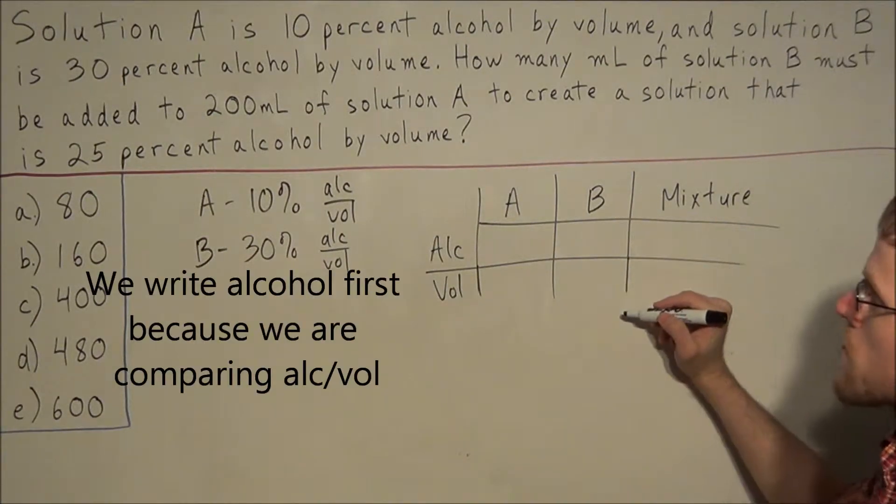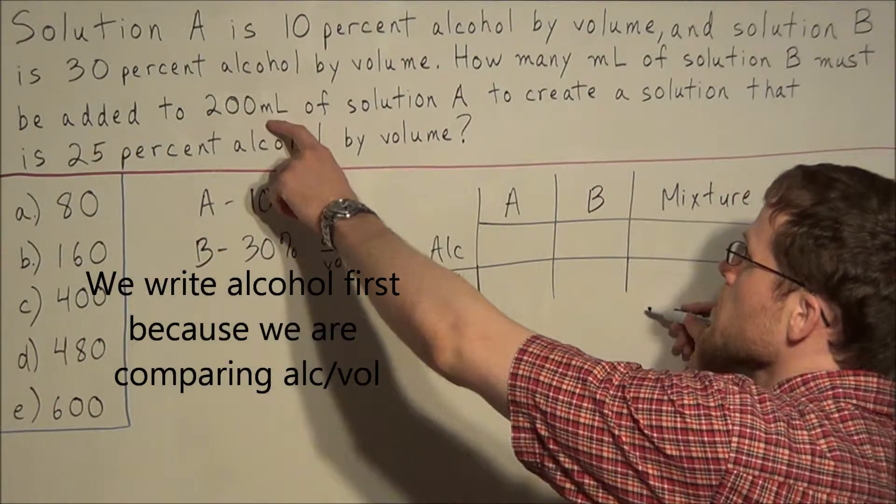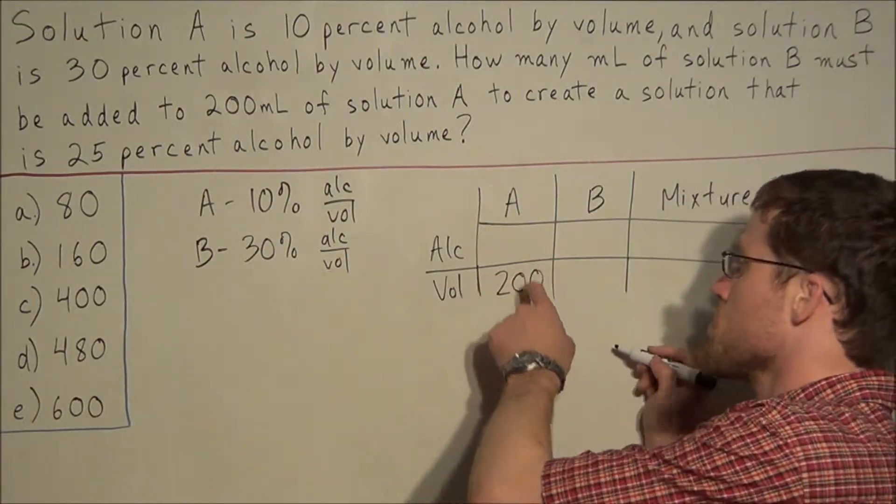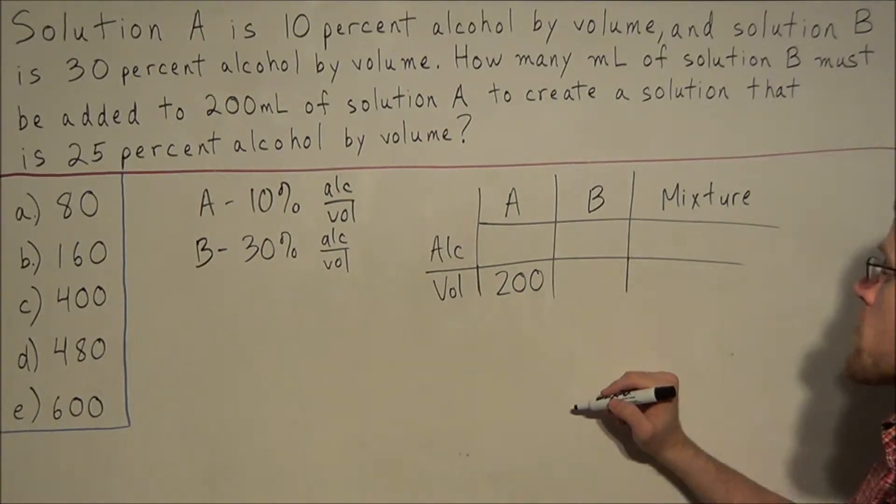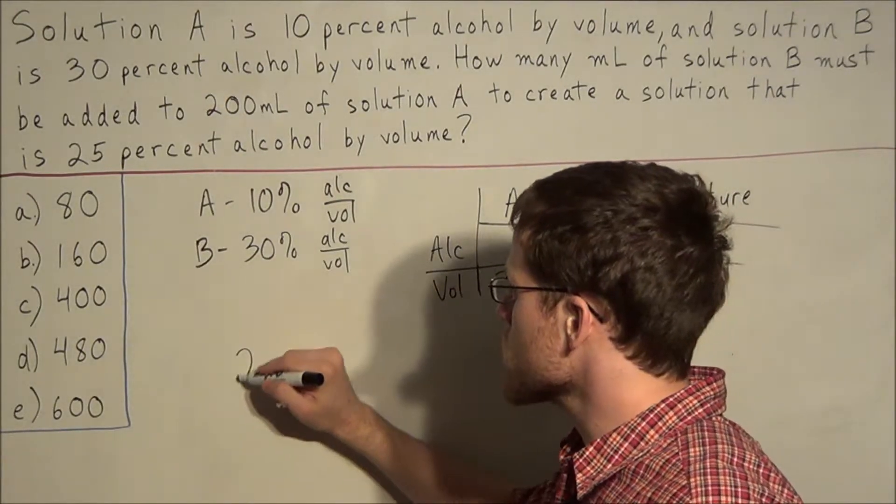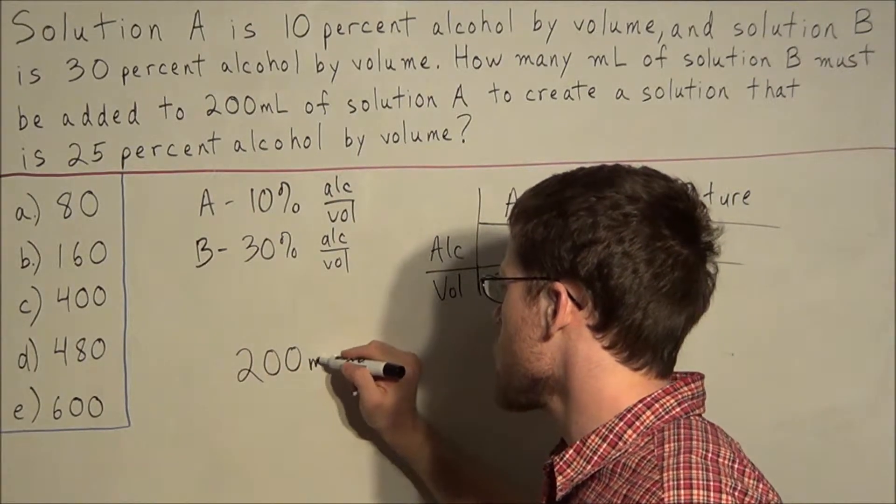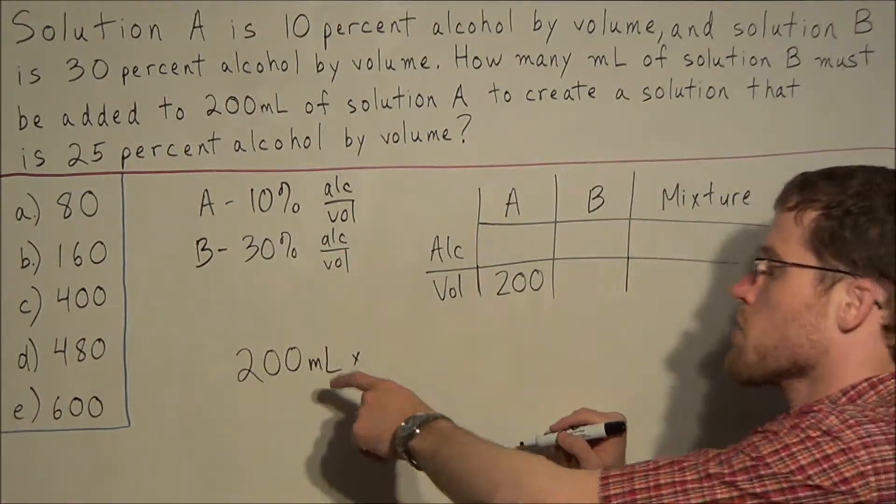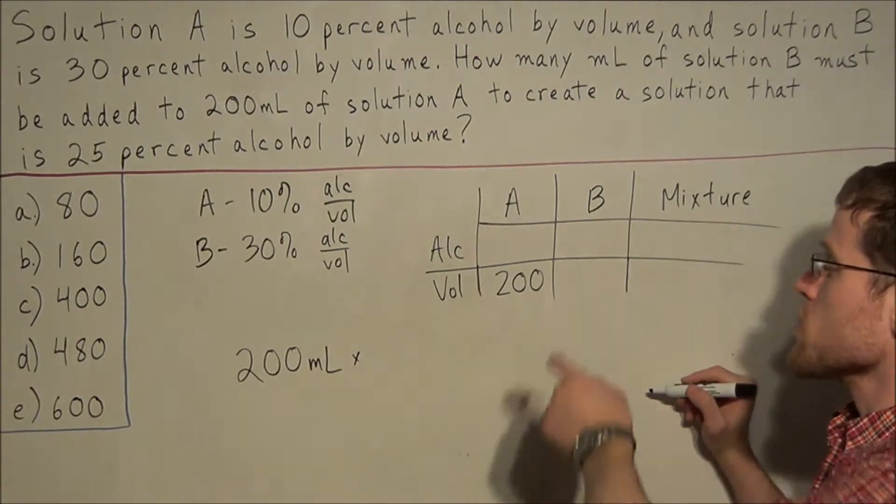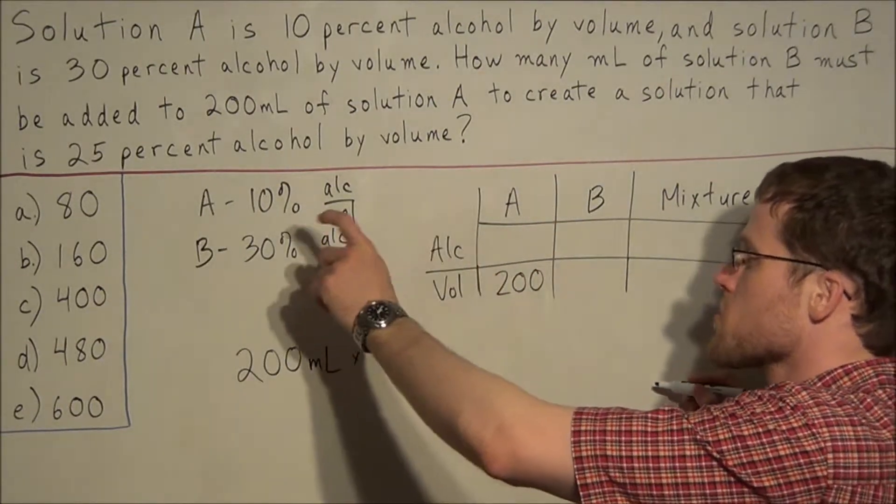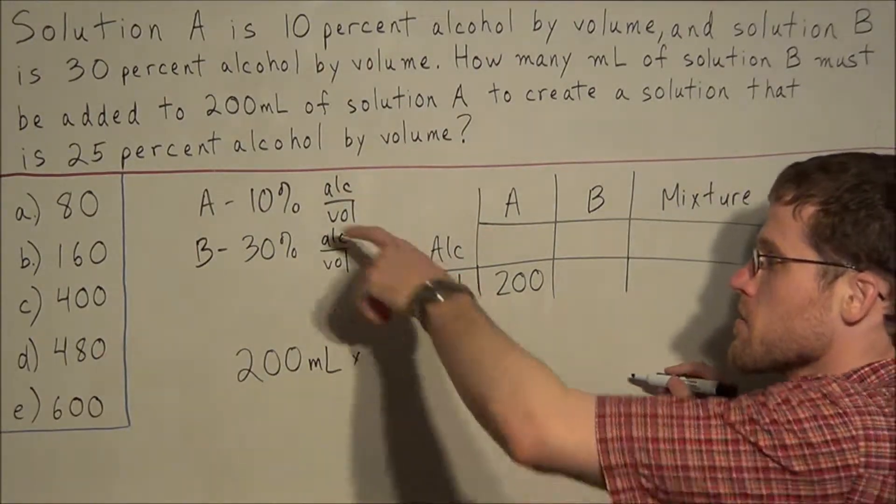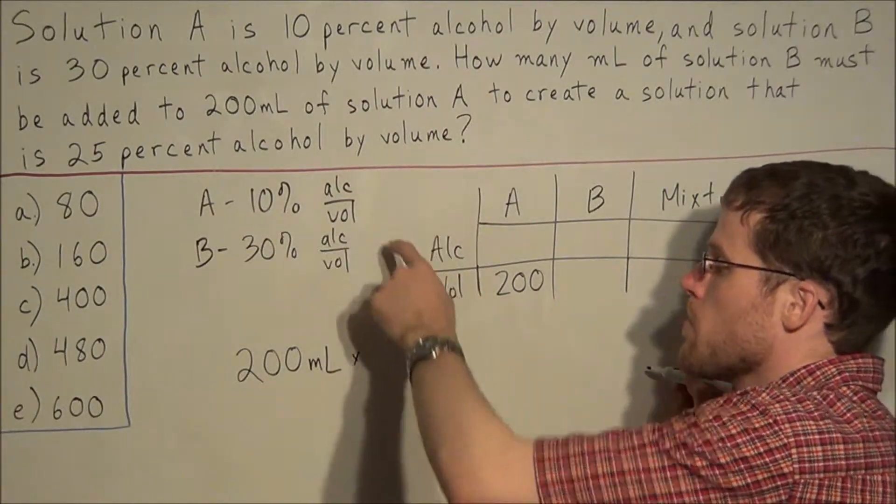We know that we have 200 milliliters of solution A. So if we are trying to find out how much alcohol is in 200 milliliters of solution A, what we can do is we have 200 milliliters and we are calculating 10% of 200 milliliters. Because in solution A, 10% of the solution is comprised of alcohol because of this information, 10% alcohol by volume.